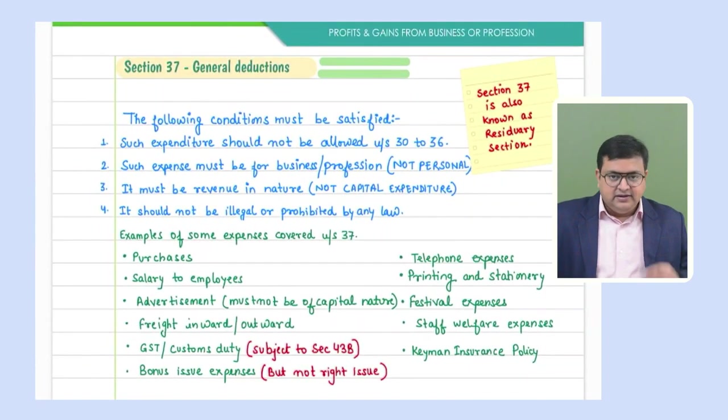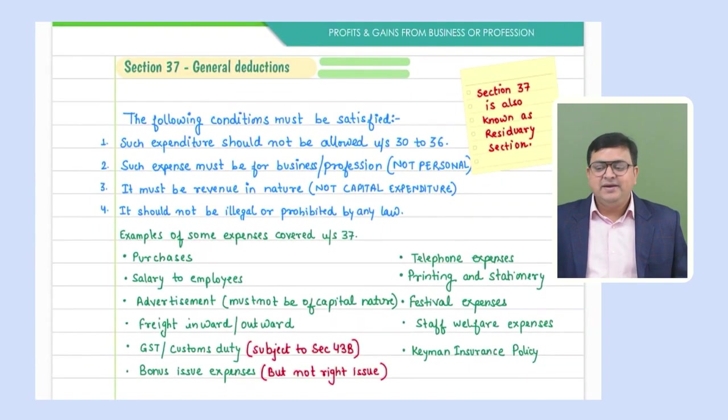These are the expenses allowed under Section 36, which deals with 'other deductions.' Now we move to Section 37, which is the general deduction provision. Unlike Sections 30–36 which were specific (building, machinery, depreciation, scientific research, or specific listed expenses), Section 37 is a general deduction section.